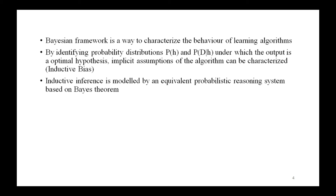More precisely, suppose p(h) is any probability distribution over the hypothesis space that assigns p(h1) greater than or equal to p(h2) if h1 is more specific than h2. Then it can be shown that Find-S outputs a MAP hypothesis, assuming that prior distribution for the hypothesis space and the same distribution p(D|h).